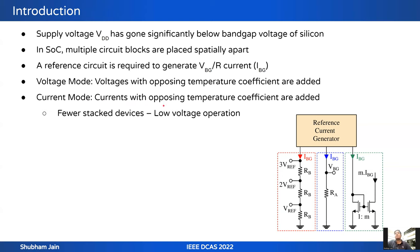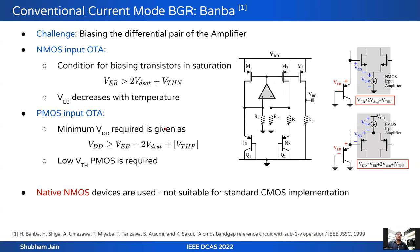In current mode voltage references, fewer stacked devices are used, making them suitable for low voltage operation. This is a conventional current mode BGR by Banwa. In this circuit, biasing the differential pair of the amplifier is a major challenge. For an NMOS input OTA, at high temperatures, the input common mode voltage may not be sufficient to keep the input transistors and tail transistors in saturation because VEB decreases with temperature. For a PMOS input OTA, low threshold PMOS devices are required for low voltage operation.